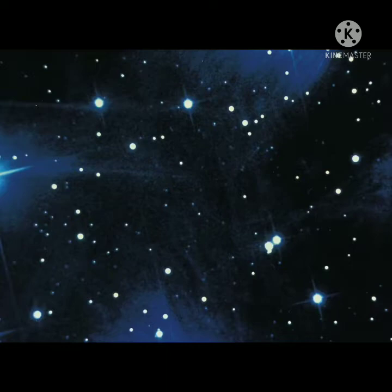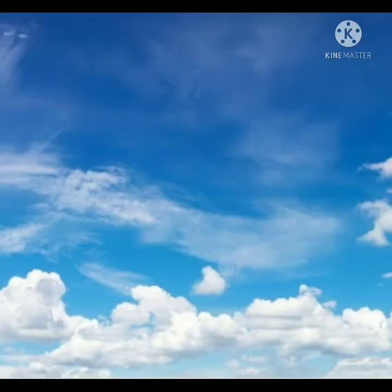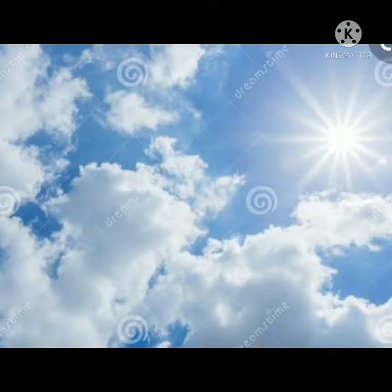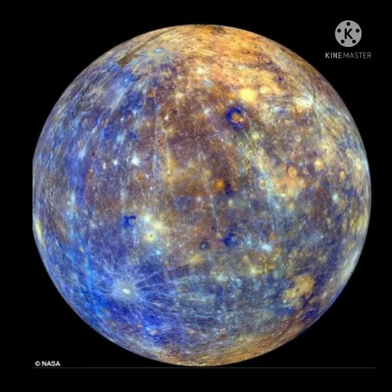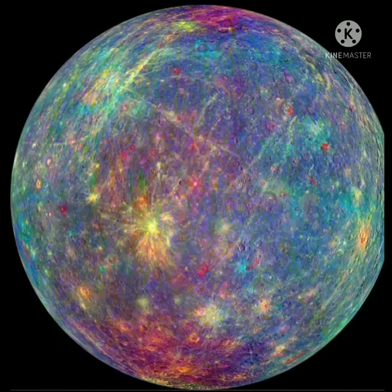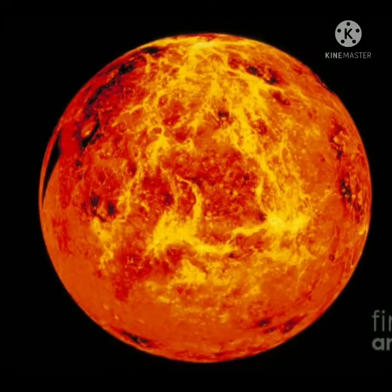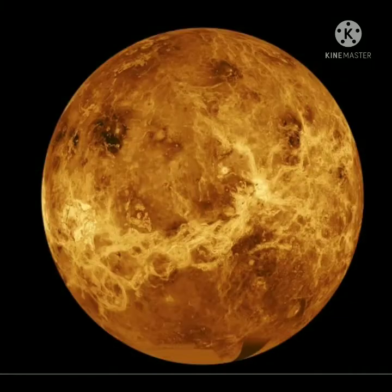Stars do not disappear during daytime; they are present in the sky all the time. However, they are not visible during daytime due to the sun's brightness. We can see some planets like Mercury and Venus during early morning and evening hours, and thus they are known as morning and evening stars.